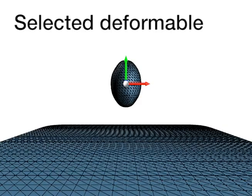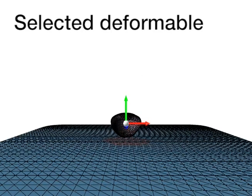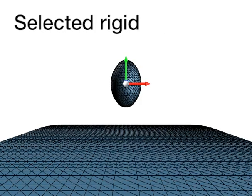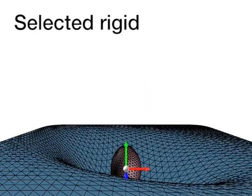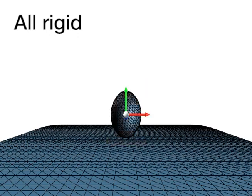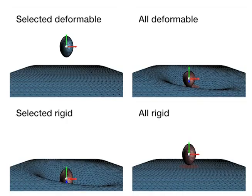We can also manipulate the response to achieve a wide array of control over modeling sessions. Here we alternate between modifying all or only selected vertices during response, and whether or not they are moved rigidly.